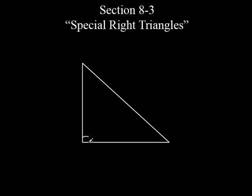Let's make that look a little bit better. So there's a right triangle — you know it's a right triangle because of the little box right there. This is special because this side right here is equal to this side. We've learned that already — that's called an isosceles triangle, but this is specifically an isosceles right triangle.